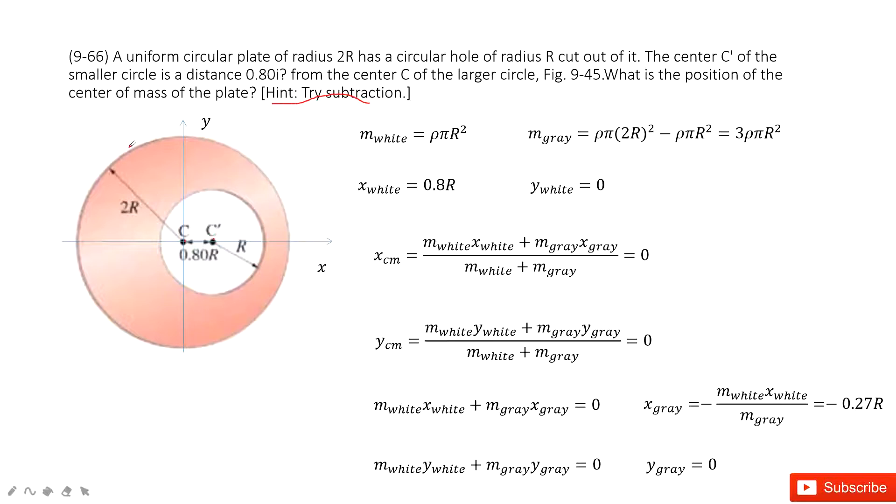So, we can consider this large uniform circle just includes two parts. First part is this green part, the second part is this white part.